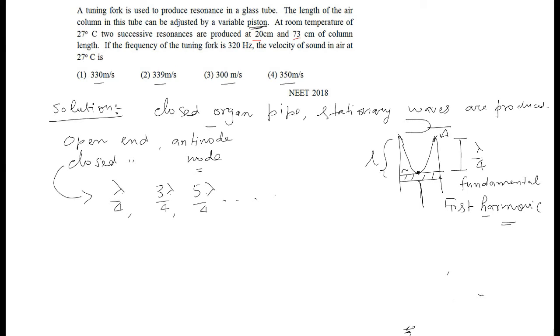Why length is variable? The piston is adjusted, so that the length can be varied. Lambda would be constant here. Length will accordingly adjust. This can be L1, L2, this is first harmonic.